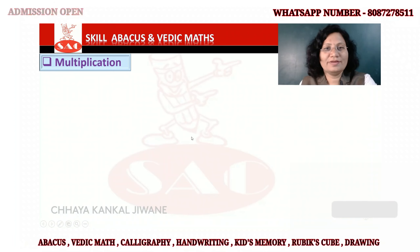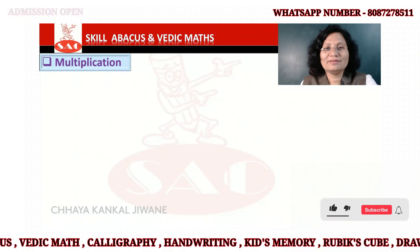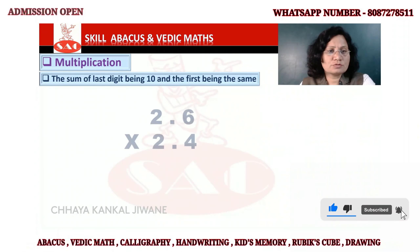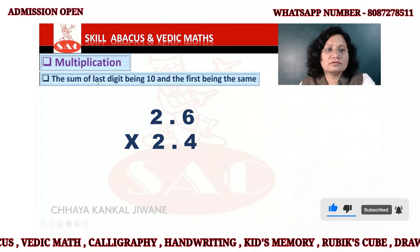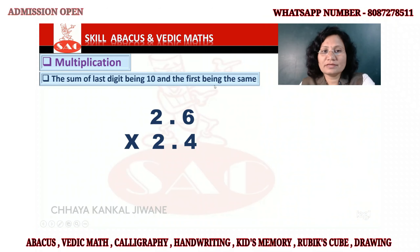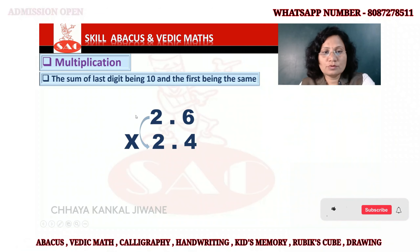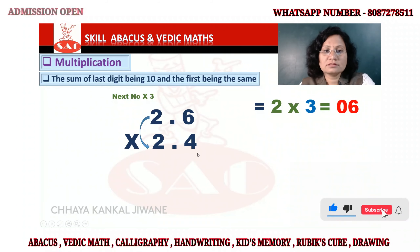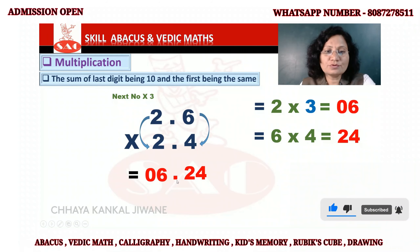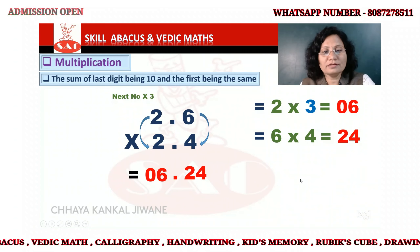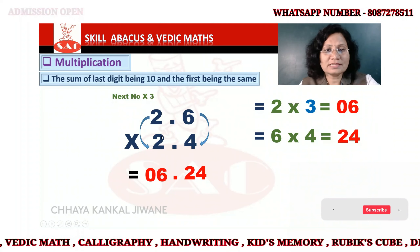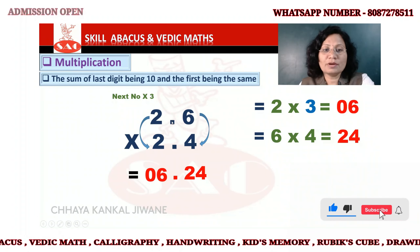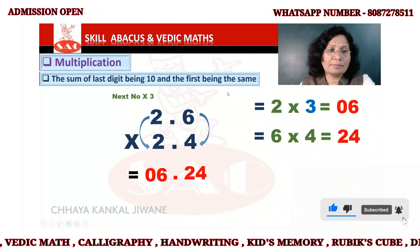Welcome. Now we'll see multiplication of decimal numbers. The condition here is that the sum of the last digits is 10 and the first digits are the same. So 2.3 times 2.6: 3 and 6 are 24, put a decimal point, and 2 times 3 is 6, giving 0.6 — so the answer is 6.24. It's easy to see decimal multiplication here.